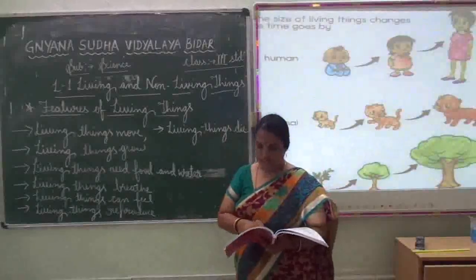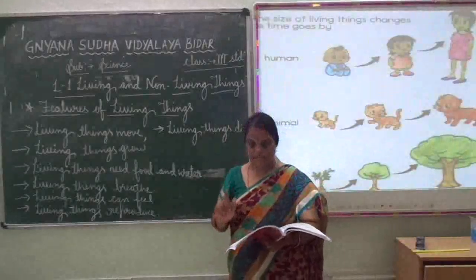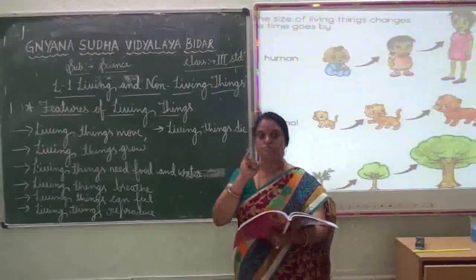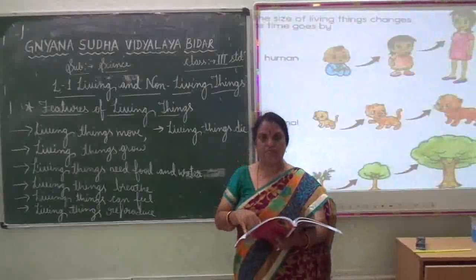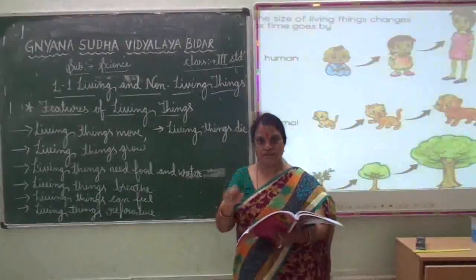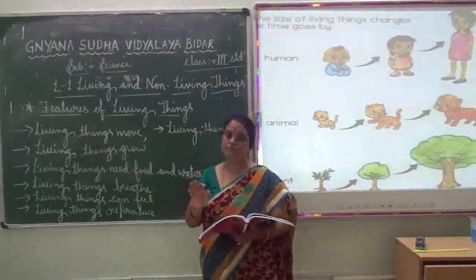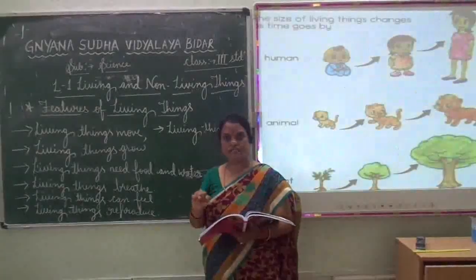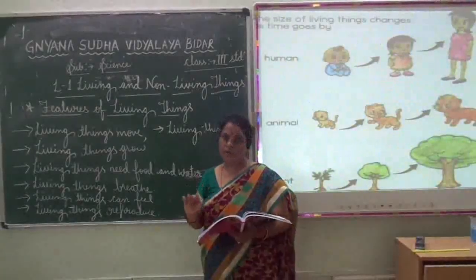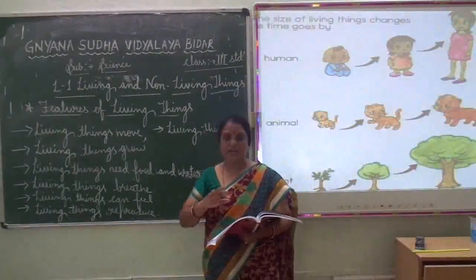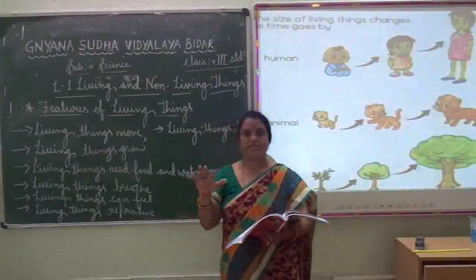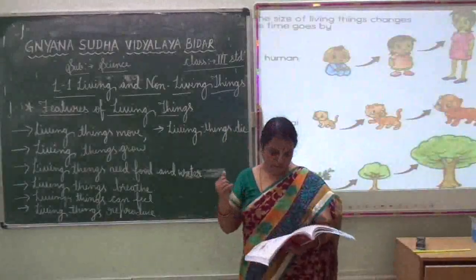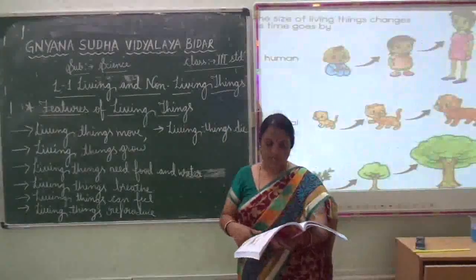A lion needs animals like the deer to stay alive. So some are plant-eating animals, some are flesh-eating animals, and some eat both. These are called herbivorous, carnivorous, and omnivorous. Here we are dividing these animals into herbivorous, carnivorous, and omnivorous.